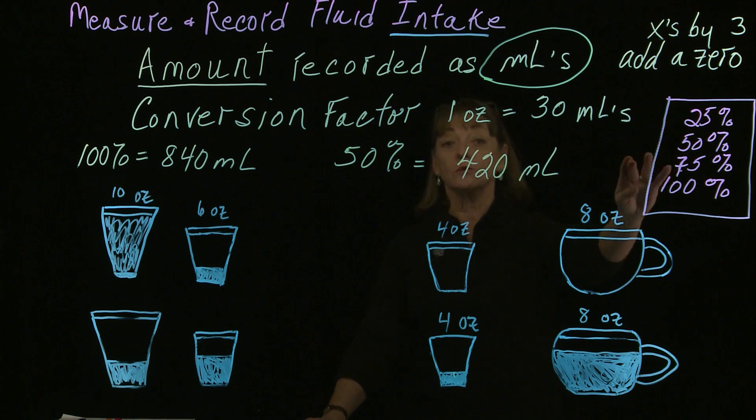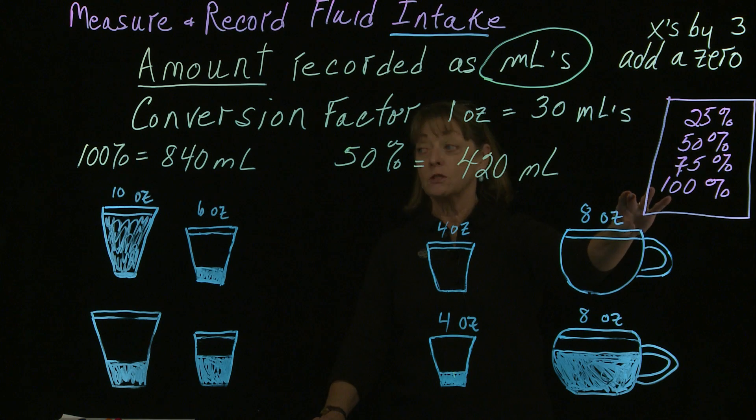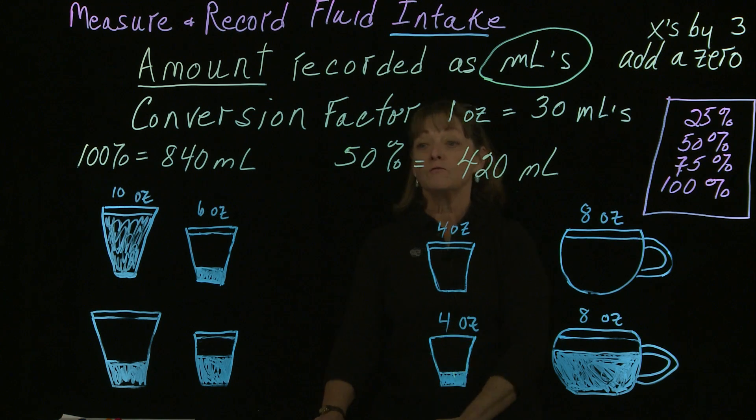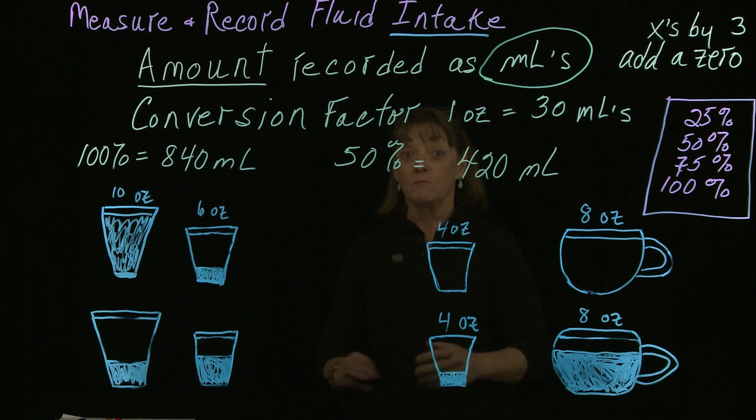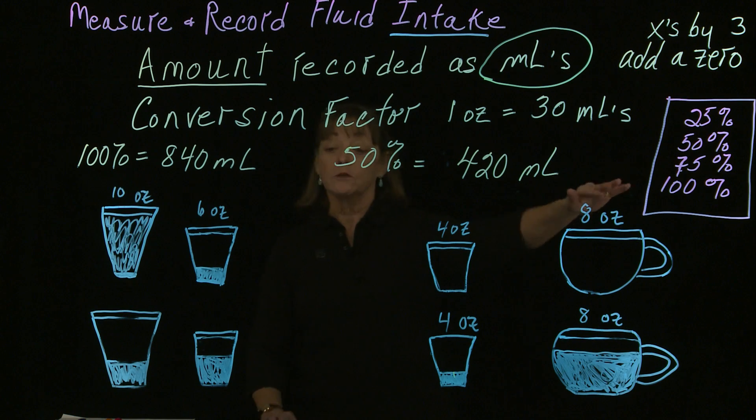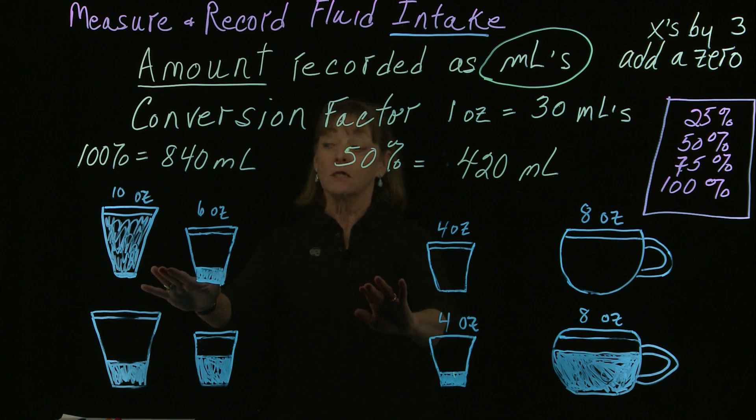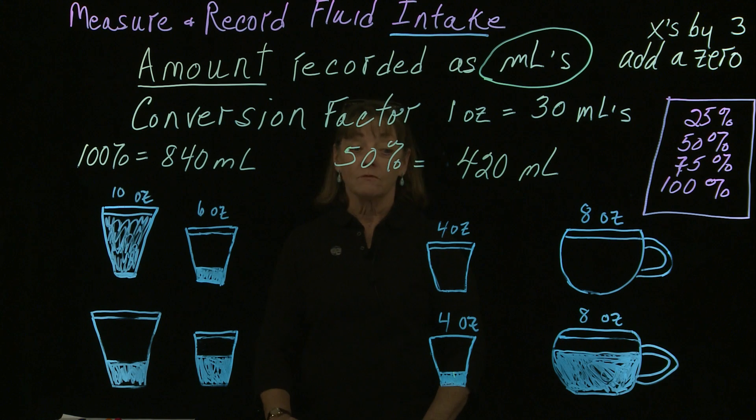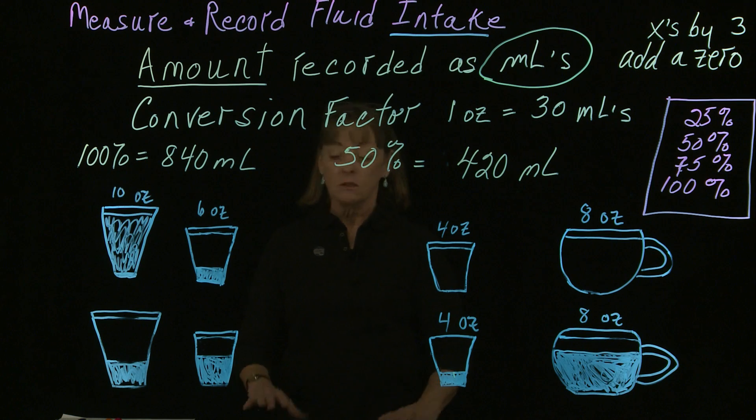We're only going to record in quarter increments, quarter percentages. So this is really going to bother some folks who are more mathematically inclined because it isn't as precise as they would like it to be. But there's no need to do long division. We're not going to have anything that's 33 and a third percentage or 79%. It's going to fall into one of those categories. Remember, this is an approximation because we don't have a measuring device at the table. We're just approximating.